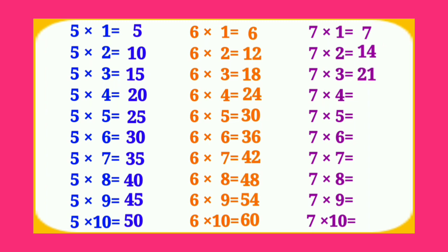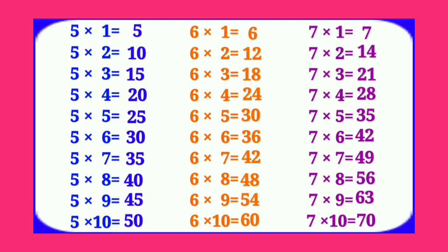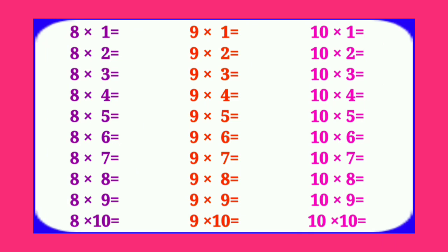7 3's are 21, 7 4's are 28, 7 5's are 35, 7 6's are 42, 7 7's are 49, 7 8's are 56, 7 9's are 63, 7 10's are 70. Table of 8. 8 1's are 8, 8 2's are 16.